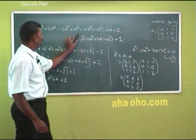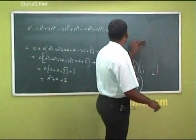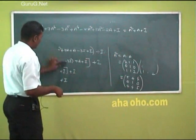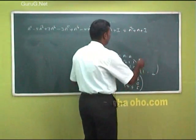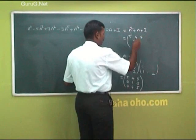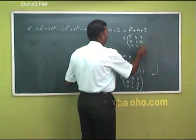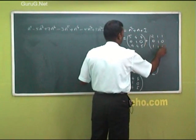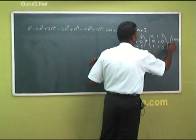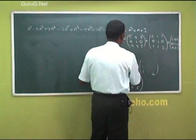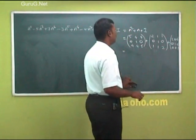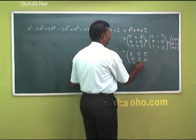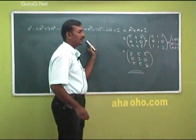So the final answer equals A² + A + I = [5,4,4; 0,1,0; 4,4,5] + [2,1,1; 0,1,0; 1,1,2] + [1,0,0; 0,1,0; 0,0,1]. Simplifying: [8,5,5; 0,3,0; 5,5,8]. That is the answer for the given expression.